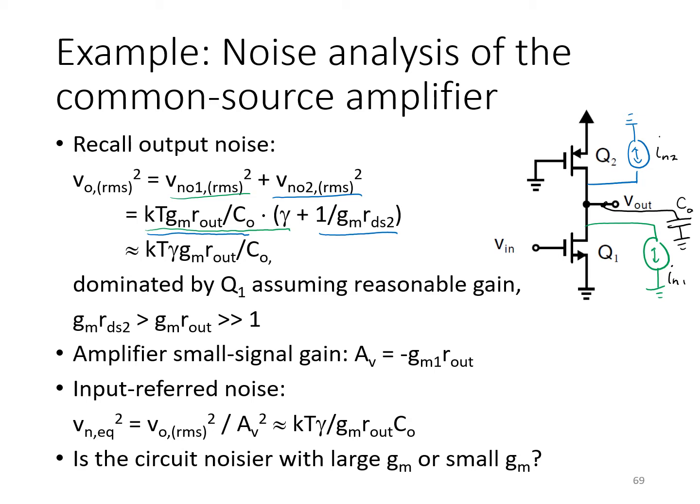Just a reminder, these total integrated noise values at the output can be found by multiplying the white noise spectral density at the output by the noise equivalent bandwidth, which is equal to, in this case, assuming a first order low pass response, the bandwidth of that first order low pass response times π by 2. That's the noise equivalent bandwidth.